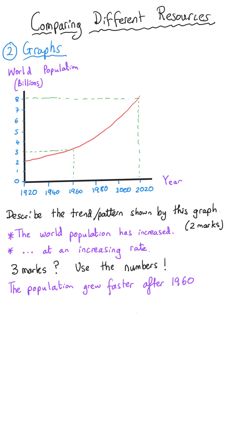A follow-up to this question might be suggest some problems that could be caused as a result of this growing population. And let's suppose it was a two mark question. That means you need to give a reason why this could be an issue and then develop it with an explanation as to why that causes a problem.